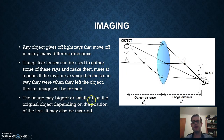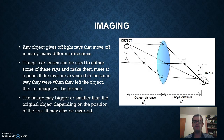Depending on where you put your lens, object, and image, the image formed may be bigger or smaller than the original object, and it may also be inverted — upside down — like this image over here.